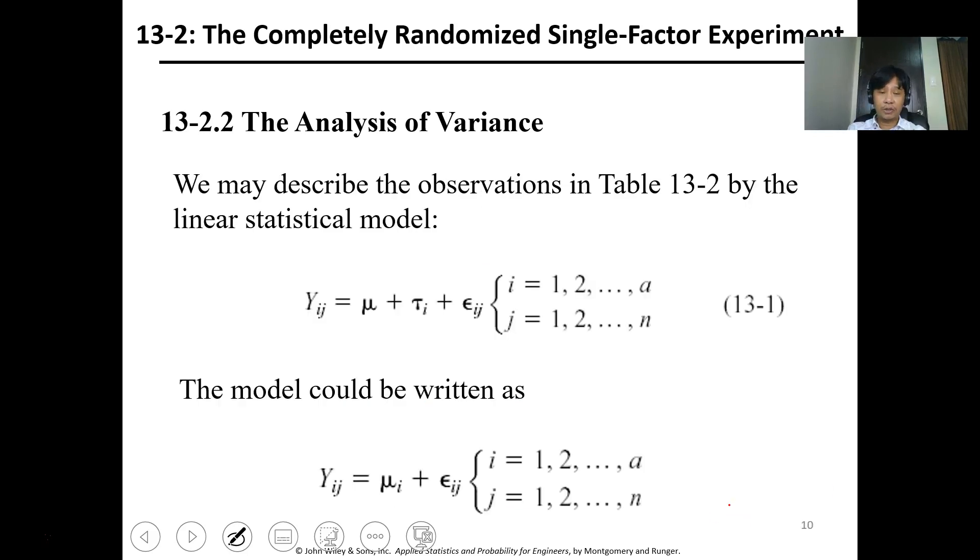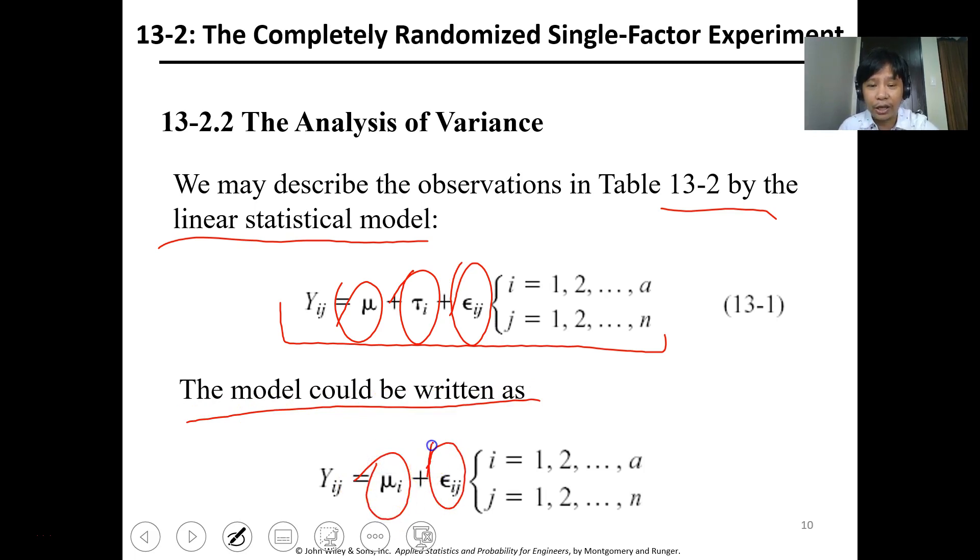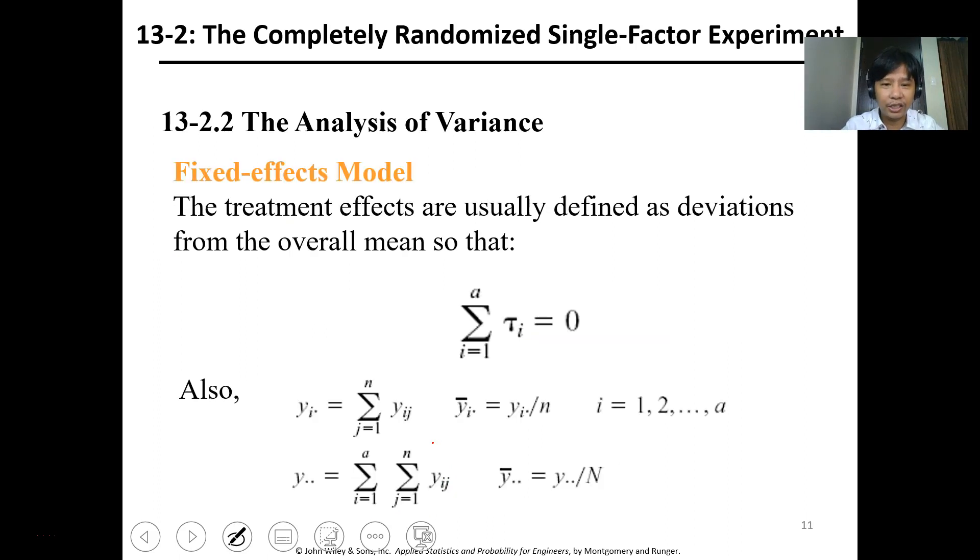For the analysis of variance, we may describe the observations by a linear statistical model. Remember this from our linear model: we have the mean plus tau plus the error. The model can be written as the mean of each value then the error for each value. It's a linearized model.